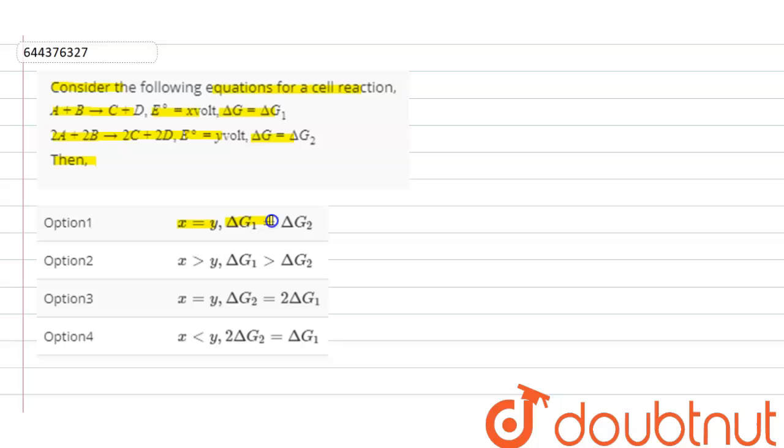Option 1: X is equal to Y, delta G1 is equal to delta G2. Option 2: X greater than Y, delta G1 greater than delta G2. Option 3: X is equal to Y, delta G2 is equal to twice of delta G1. Option 4: X is less than Y, twice of delta G2 is equal to delta G1.